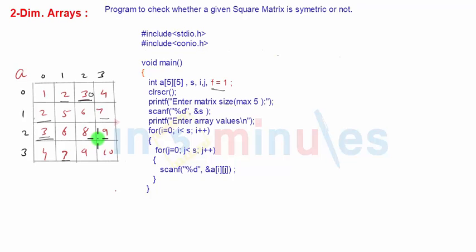And after the loop is finished we'll check if that flag variable, that is f variable, is still 1 that indicates there was no mismatch found, that indicates it's a symmetric matrix. And if after the for loop f is 0 that indicates mismatch was found, that will indicate that the matrix is not a symmetric matrix.